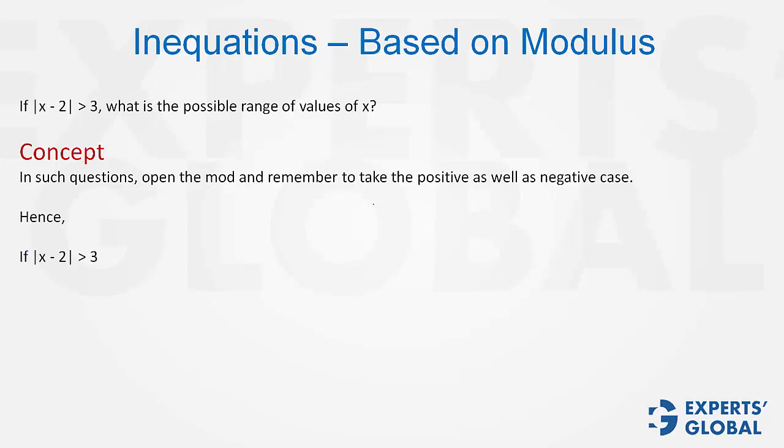Hence, if mod of x minus 2 is greater than 3, it can mean two things. One, that either x minus 2 is greater than 3 or x minus 2 is smaller than negative 3.